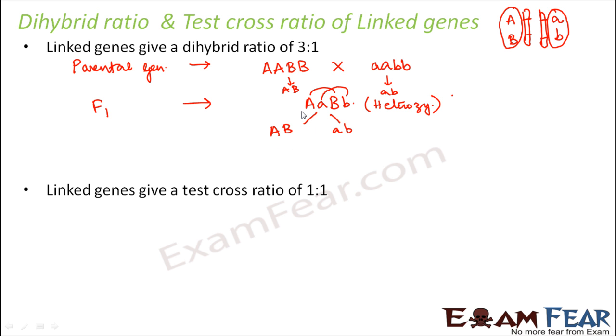So these are the only possible gametes. Now, when we self-pollinate or when we cross the F1 generations amongst themselves, so that is we cross it with another AABB. So what happens? Again, this also produces the same gametes.